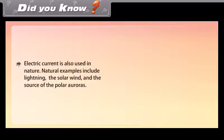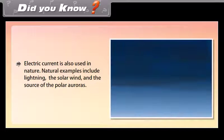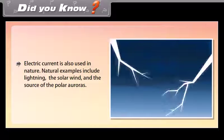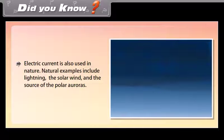Did you know? Electric current is also used in nature. Natural examples include lightning, the solar wind, and the sources of the polar auroras.